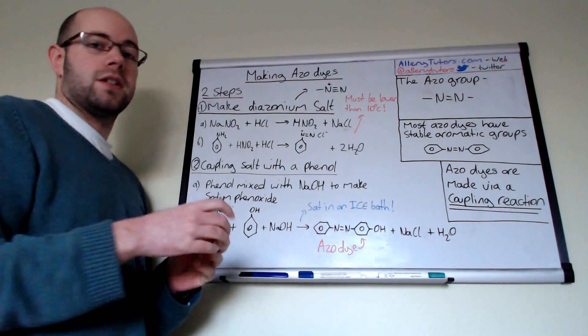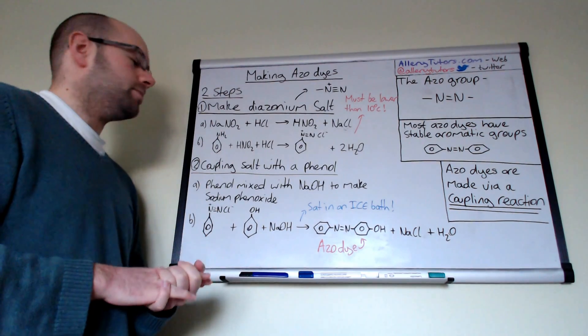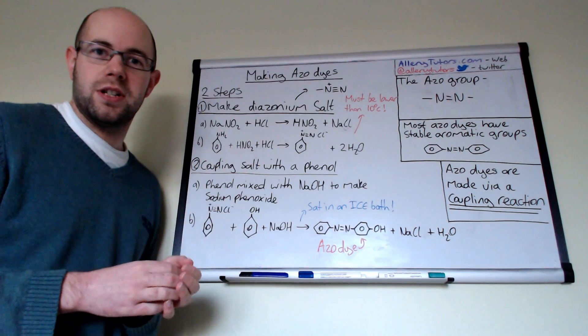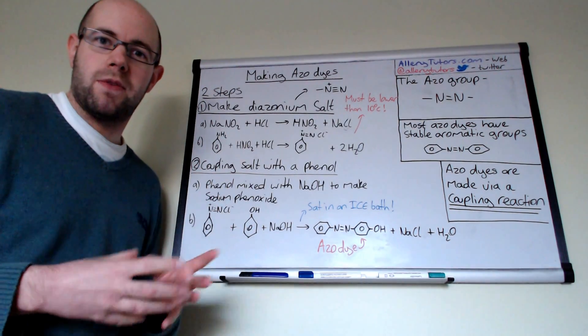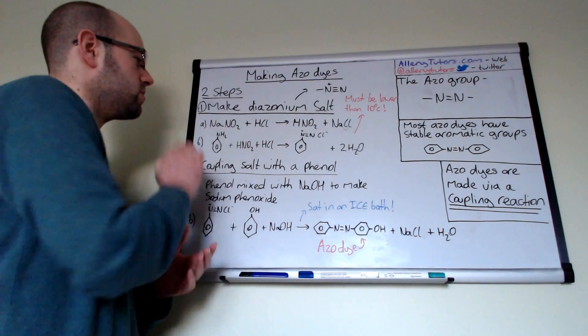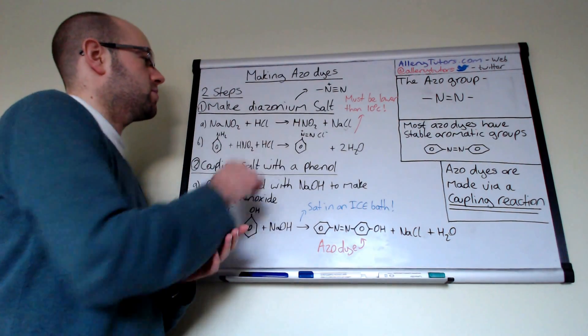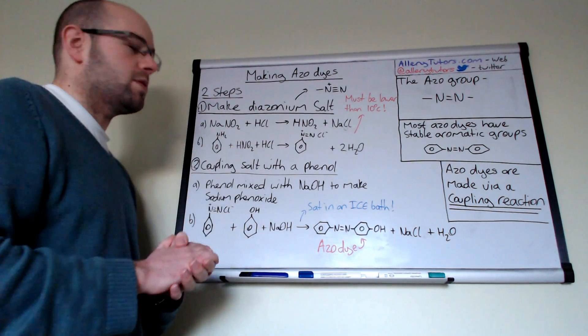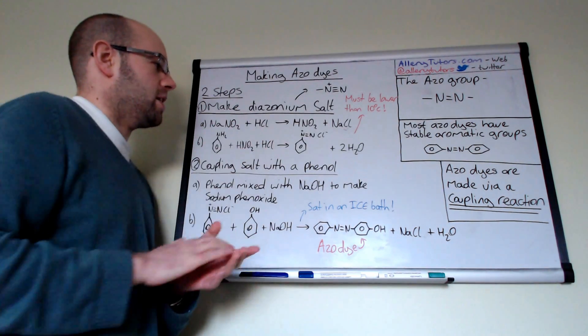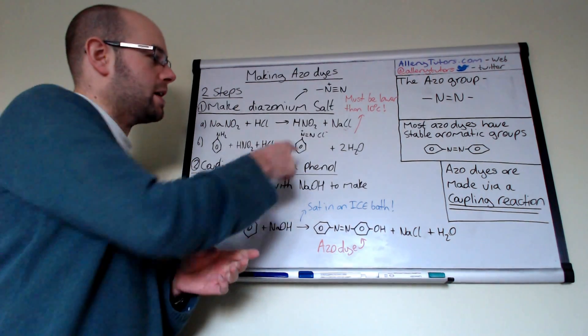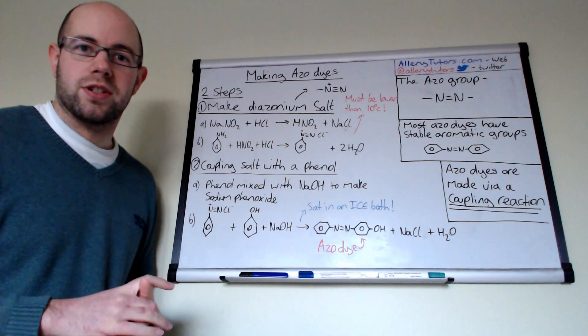We make this in kind of two stages, although all of these reactions are done in situ, which means they're done in the same reaction vessel. The first thing we need to do to make our diazonium salt is we take sodium nitrate and react it with hydrochloric acid, and we make this chemical which is called nitrous acid.